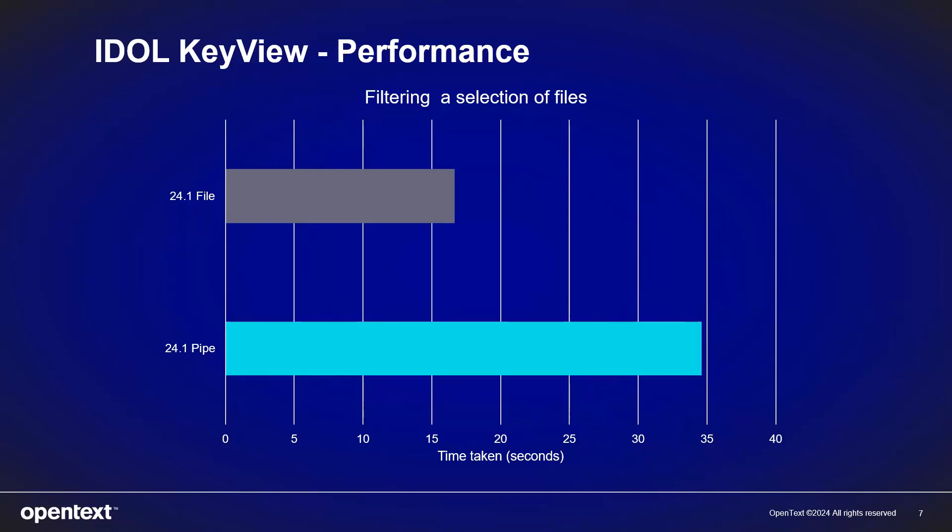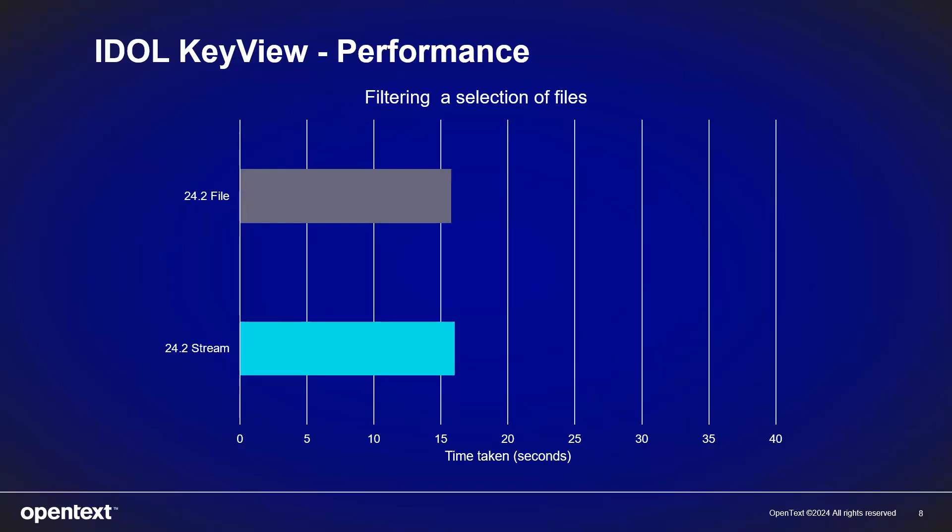With 24.2, we have worked hard to improve the performance of streaming out of process. And the same set of files can now be filtered in about the same amount of time as when you use the file-based APIs.